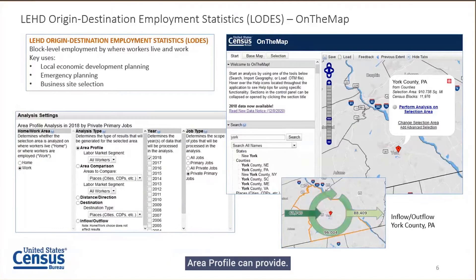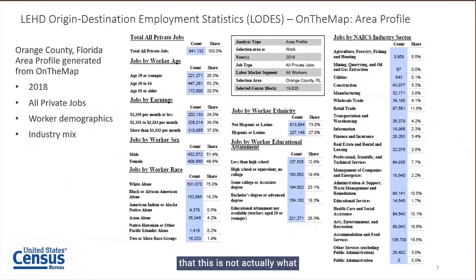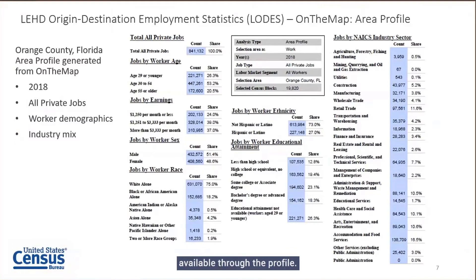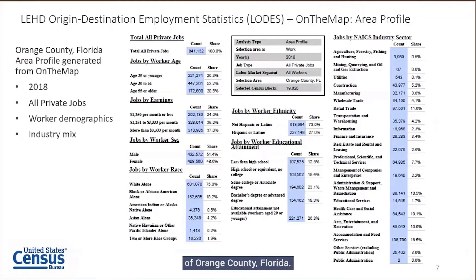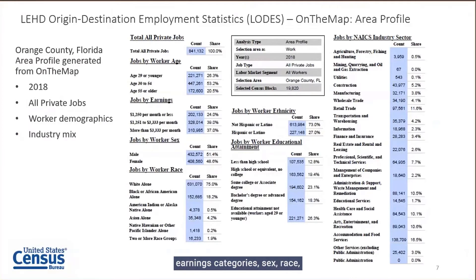The area profile consolidates the information to showcase what elements are available. Using Orange County, Florida in 2018 as an example, we can look at total private jobs, distribution by age category, earnings categories, sex, race, ethnicity, educational attainment, and also the industry distribution of jobs within the area.